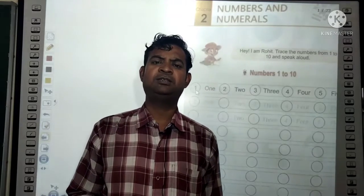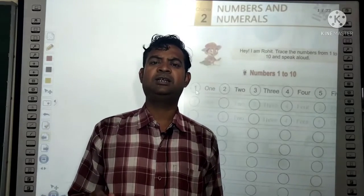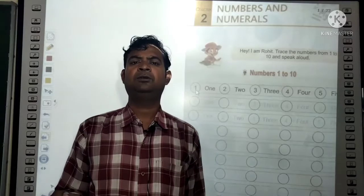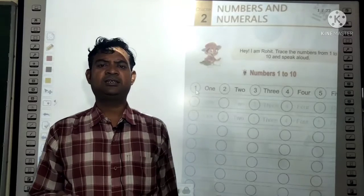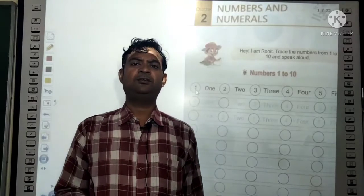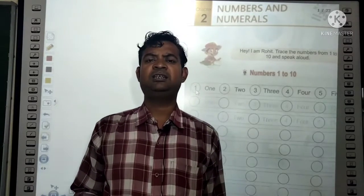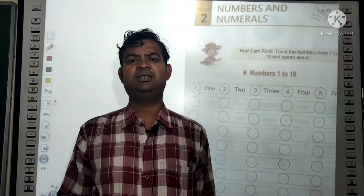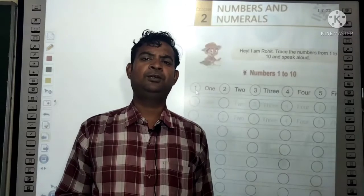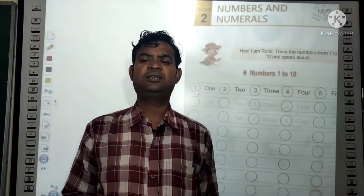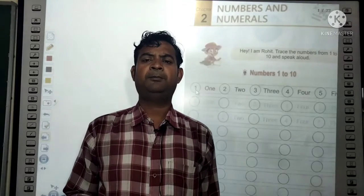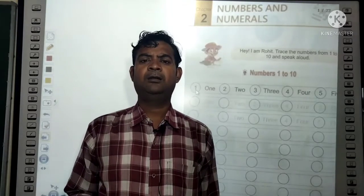When we write the name of a number, for example the number 2 — its name is T-W-O. The number 3 — its name is T-H-R-E-E.